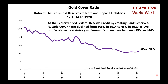As the Fed extended Federal Reserve credit by creating bank reserves, its gold cover ratio declined from 105% in 1914 to 45% in 1920, a level not far above its statutory minimum of somewhere between 35% and 40%.